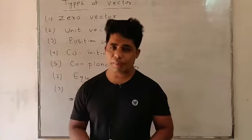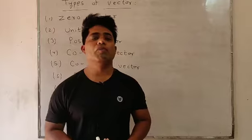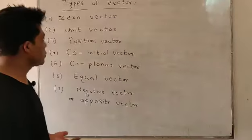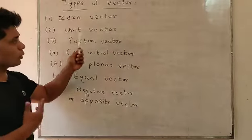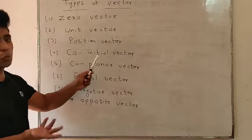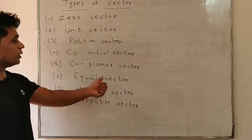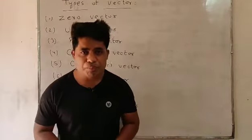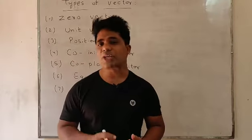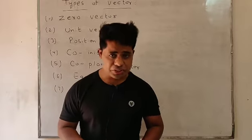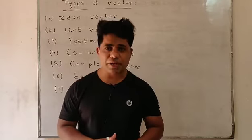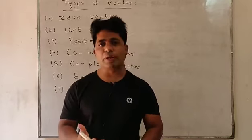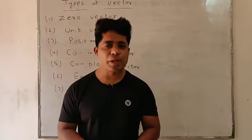Good morning students, welcome back. Today in this chapter on vectors, we'll discuss one of the most important parts — types of vectors. We'll cover zero vector, unit vector, position vector, co-initial vector, coplanar vector, equal vector, and negative or opposite vector. As a recap, vector quantities are those physical quantities that require both magnitude and direction for complete representation — examples include force, displacement, acceleration, velocity, momentum, and angular momentum.